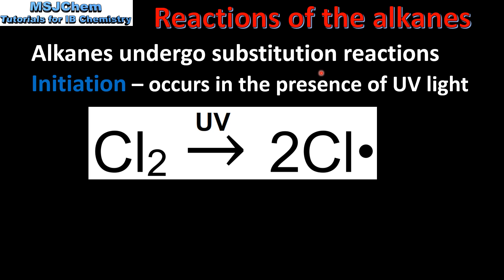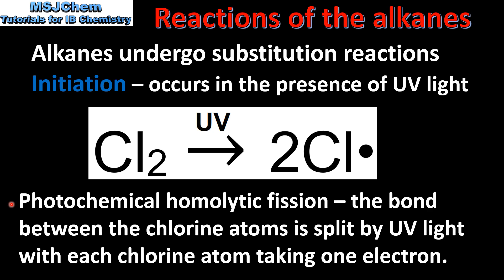Substitution reactions occur in three steps. The first step is initiation. This occurs in the presence of UV light. In the initiation step, a chlorine molecule — which is two chlorine atoms joined with a single covalent bond — breaks up in the presence of UV light to form two chlorine free radicals. Free radicals are species with an unpaired electron, which makes them very reactive. This is known as photochemical homolytic fission. The bond between the chlorine atoms is split by UV light with each chlorine atom taking one electron.